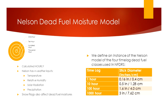For NFDRS, we align this with what we did before. We have four dead-sized classes of fuels that all represent time lags of 1, 10, 100, and 1,000 hour. We create sticks of associated diameters that represent those fuels we always used before. So in this case, we define four sticks — one with 0.16-inch diameter, 0.5, 1.6, and 3-inch diameter — and we allow the model to do the rest.